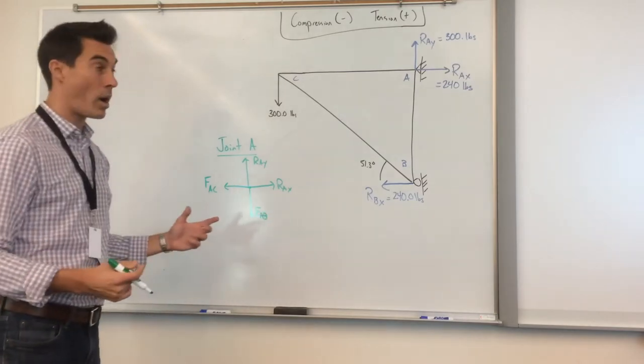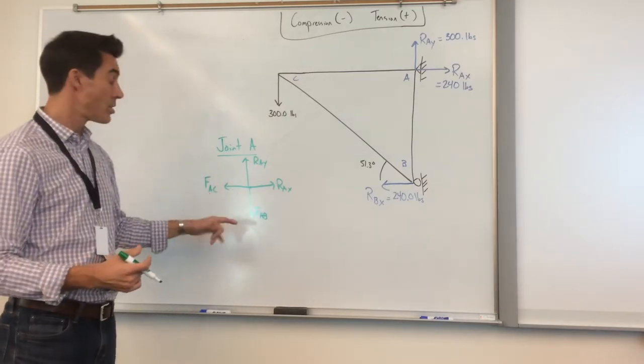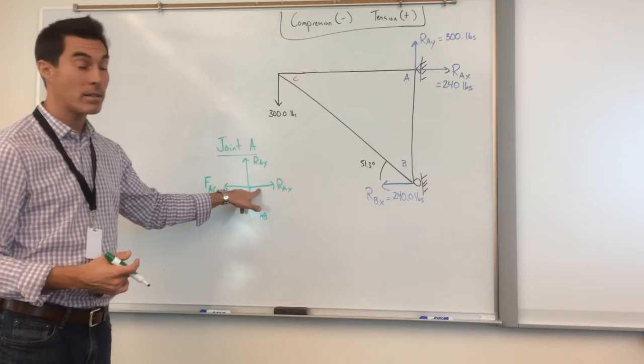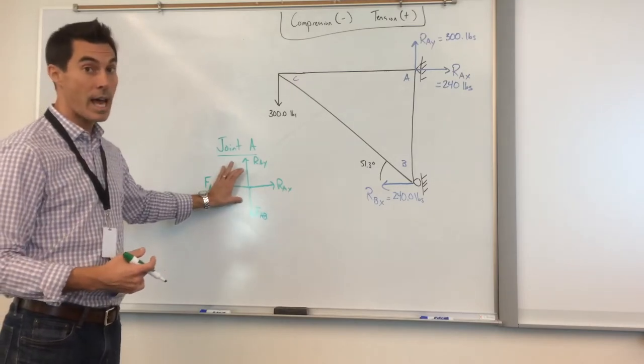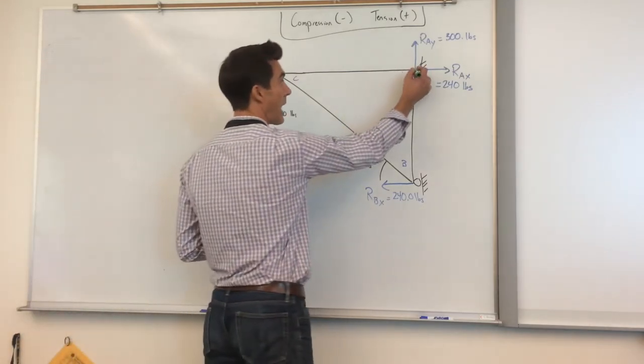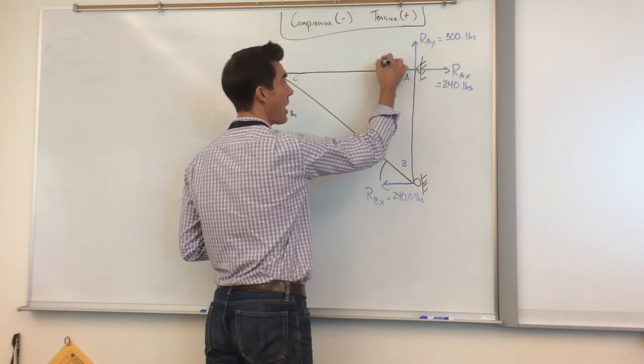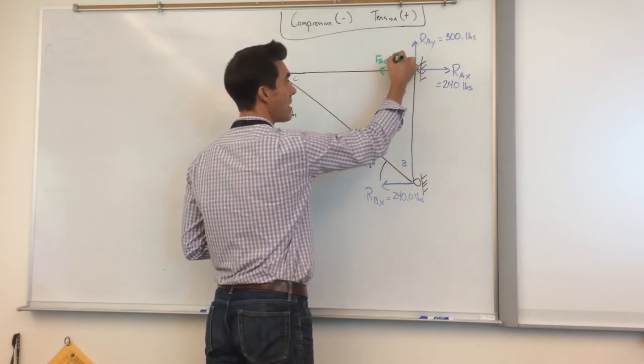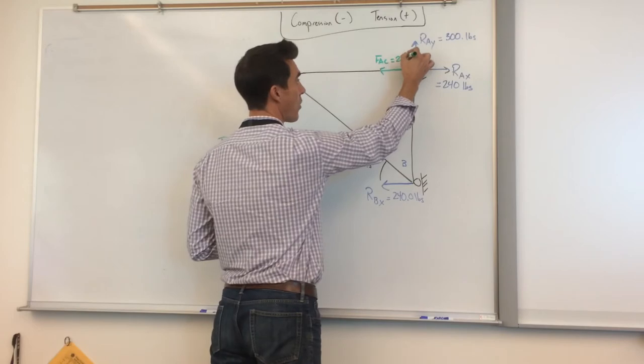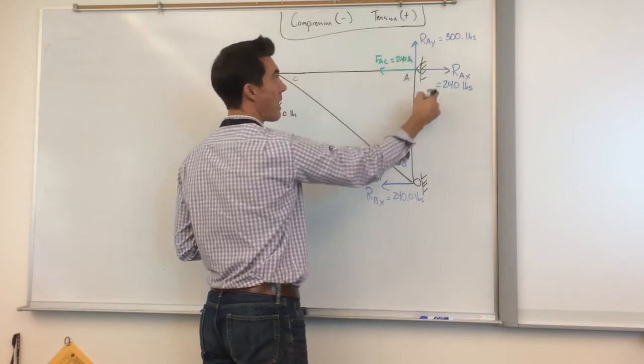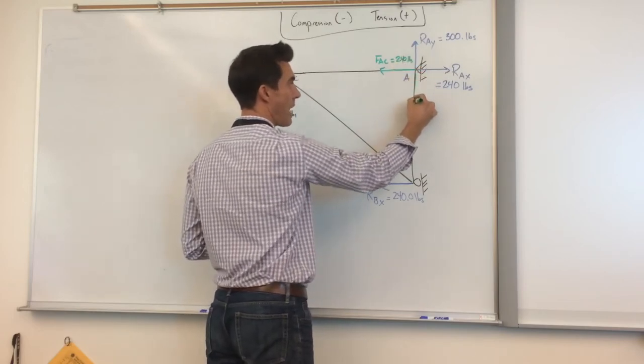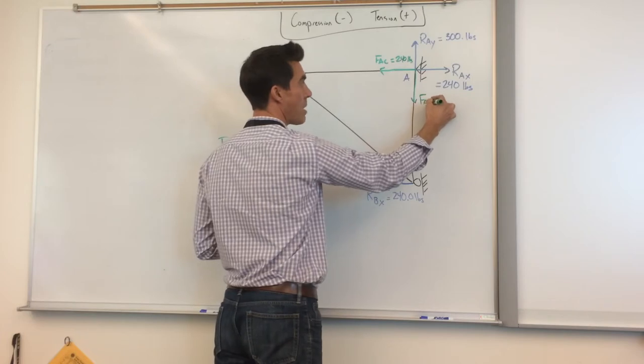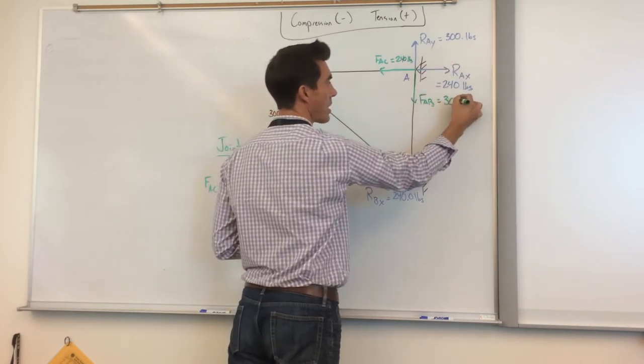Now this is a pretty easy one because there's no angles. The X forces have to balance out and the Y forces have to balance out. Therefore, we're gonna have to have a force this way. So FAC is gonna have to be equal to 240 pounds in the opposite direction. And FAB is just gonna have to be equal to 300 pounds but in the opposite direction.